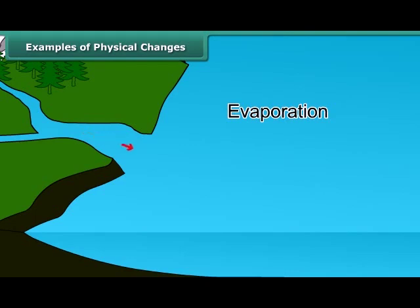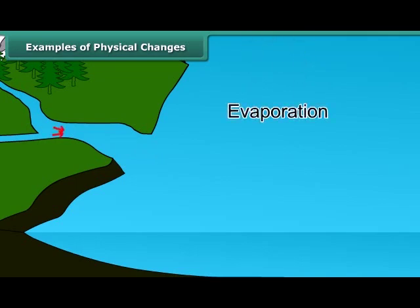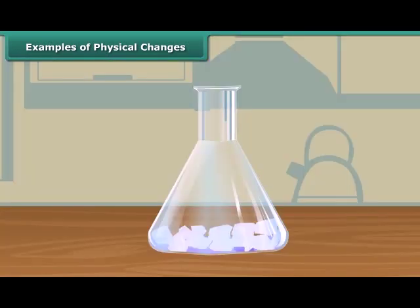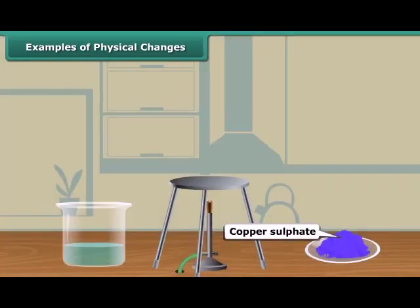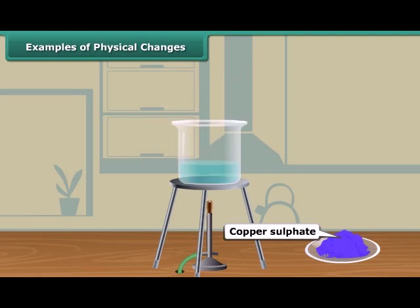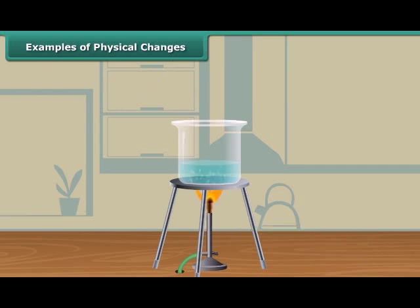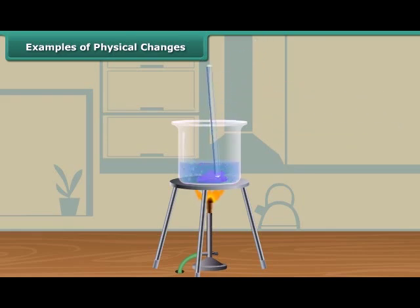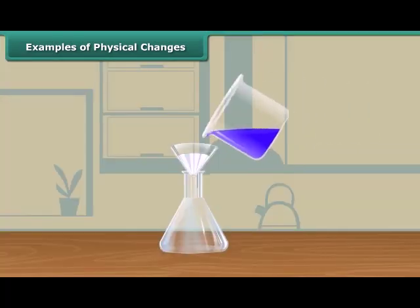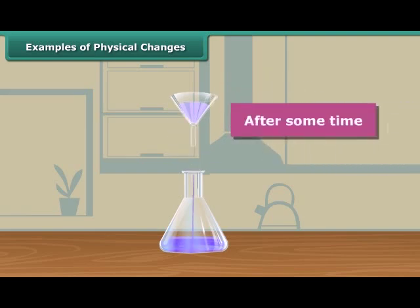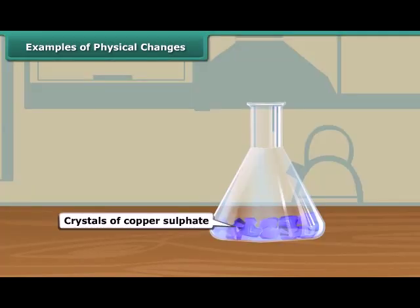Salt can be obtained by the evaporation of seawater, but the salt obtained in this manner is not pure. Pure crystals of salt can be obtained by crystallization. To prepare pure crystals of copper sulfate, take about 100 milliliters of water in a beaker, acidify it with a few drops of dilute sulfuric acid, and heat the water. When it starts boiling, add copper sulfate powder slowly with continuous stirring until a saturated solution is obtained. Filter the solution and allow it to cool. After some time, you will see blue colored shining crystals of copper sulfate in the solution.